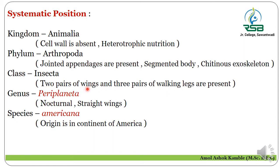The genus is Periplaneta. Cockroaches in this genus are nocturnal in habitat and have straight wings. The species is americana, because it originates from the continent of America. Therefore the species name is americana. This completes the systematic position of the cockroach.